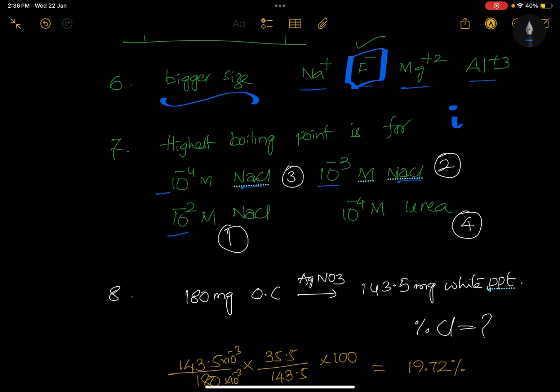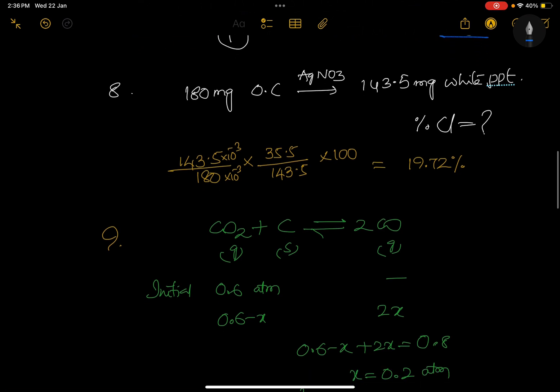Here, 10^-4 M NaCl, 10^-3 M NaCl, 10^-2 M NaCl - so for all these NaCl i-factor is 2, and urea is going to be i-factor is 1. So this is going to be least, best, next third, and this is fourth. Very basic line of solutions.